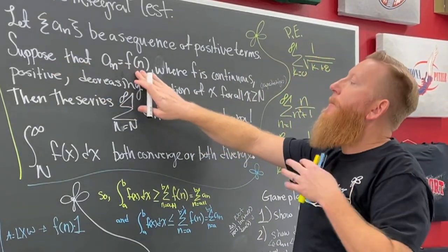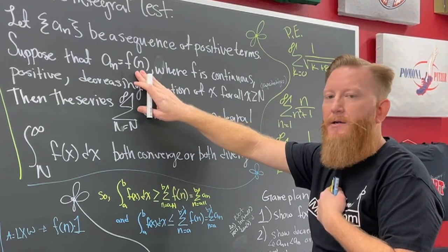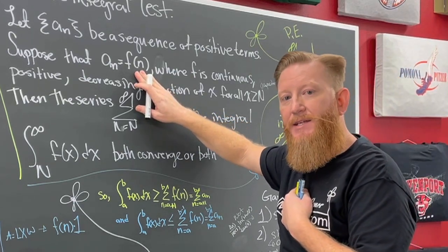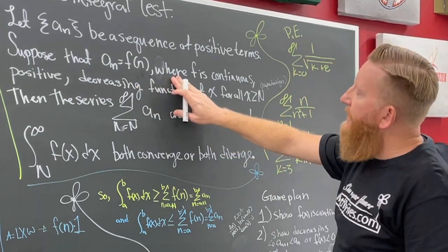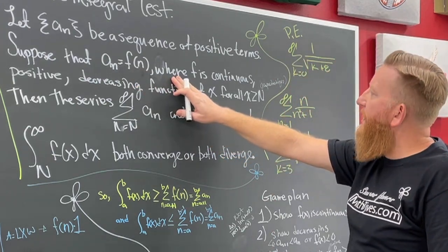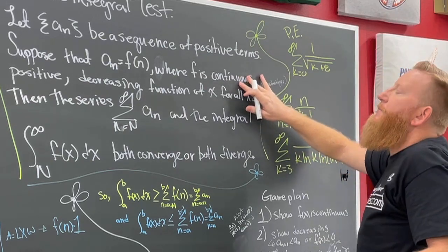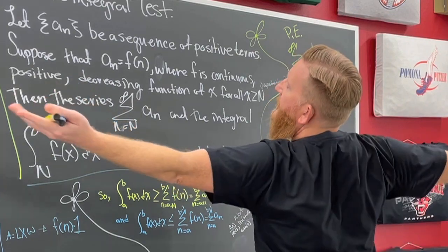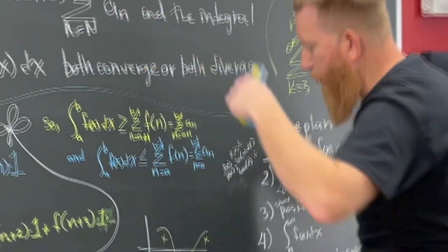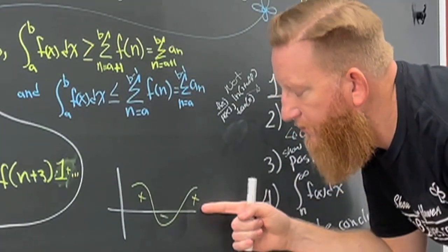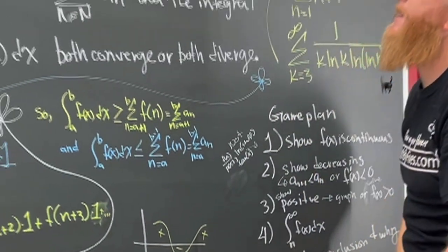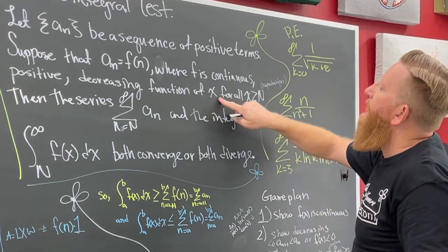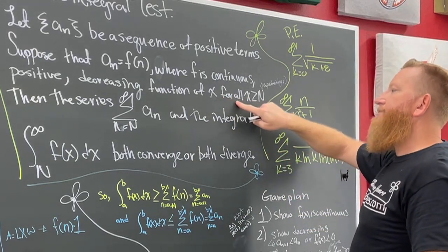Suppose the sequence is modeled by a function where the domain is restricted to the integers. We also need to suppose that f is continuous — we need to be able to integrate it — and that it's positive, meaning it's above the axis, so we don't get negative area.